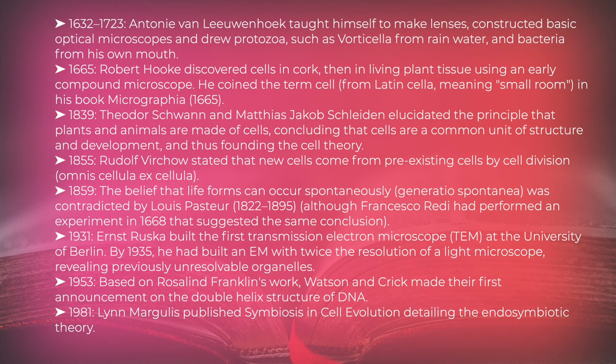1839, Theodor Schwann and Matthias Jacob Schleiden elucidated the principle that plants and animals are made of cells, concluding that cells are a common unit of structure and development, and thus founding the cell theory. 1855, Rudolf Virchow stated that new cells come from pre-existing cells by cell division, omnis cellula ex cellula.